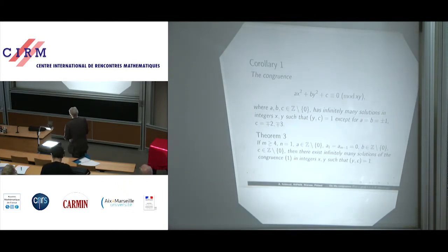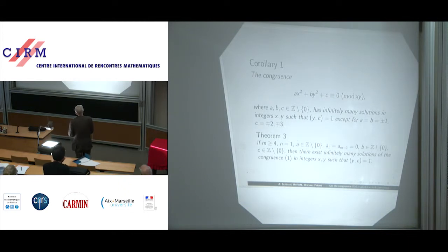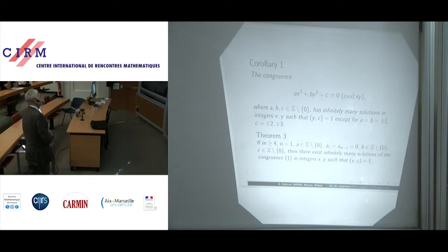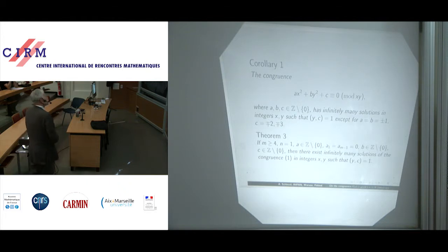Corollary 1: the congruence AX squared plus BY squared plus C congruent to 0 mod XY, where A, B, C are non-zero integers, has infinitely many solutions in integers XY such that Y is relatively prime to C, except for A equal to B equal to plus or minus 1 and C equal to minus-plus 2 or minus-plus 3.